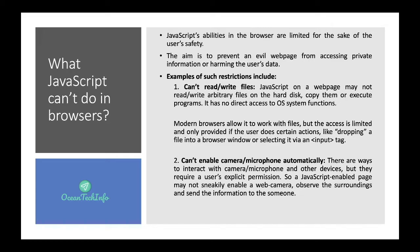JavaScript cannot enable the camera or microphone automatically. There are ways to interact with the camera, microphone, and other devices, but they require the user's explicit permission. A JavaScript-enabled page may not sneakily enable a web camera, observe the surroundings, and send that information to someone.